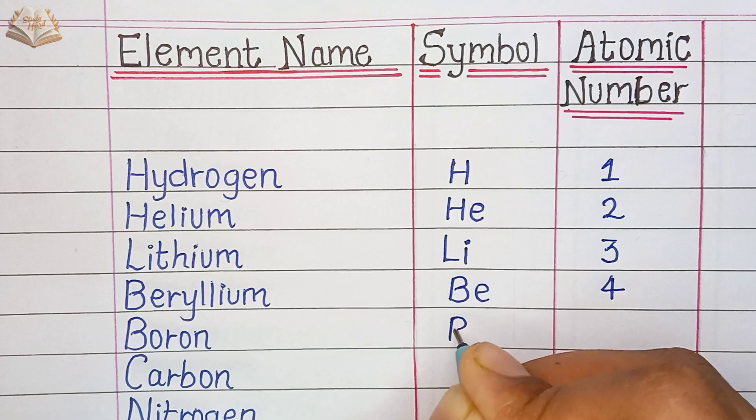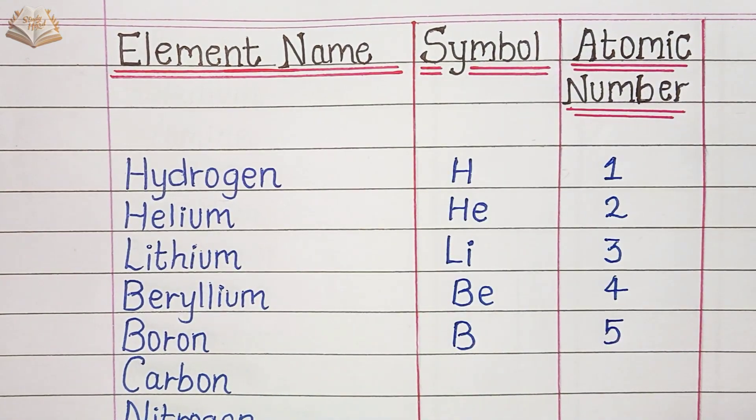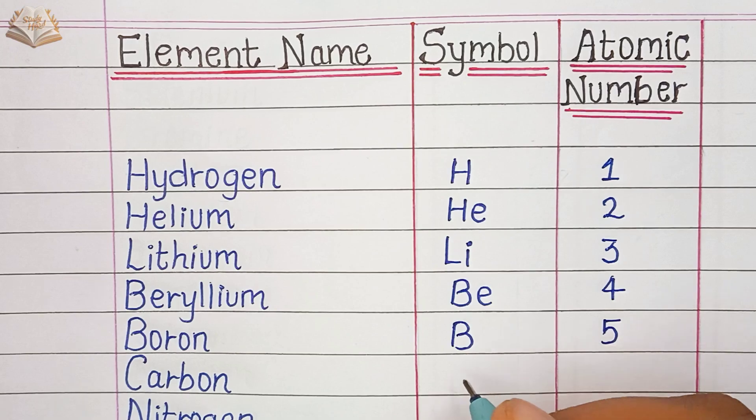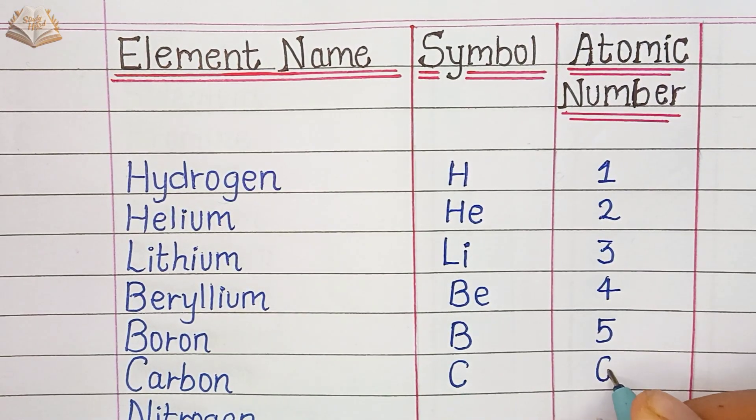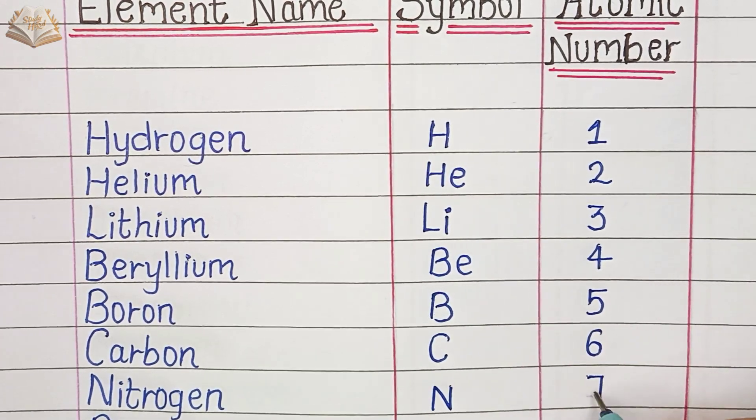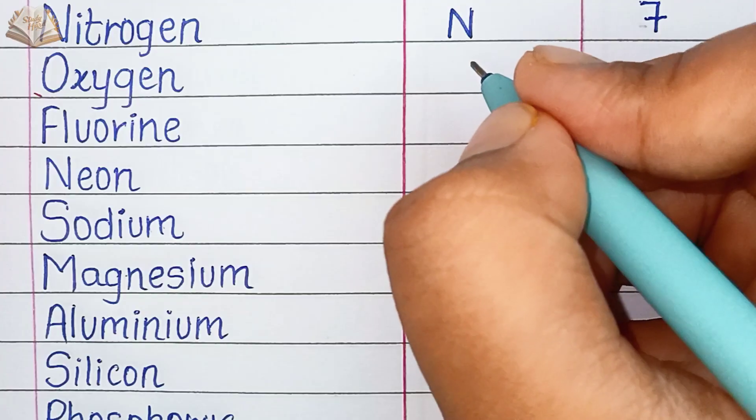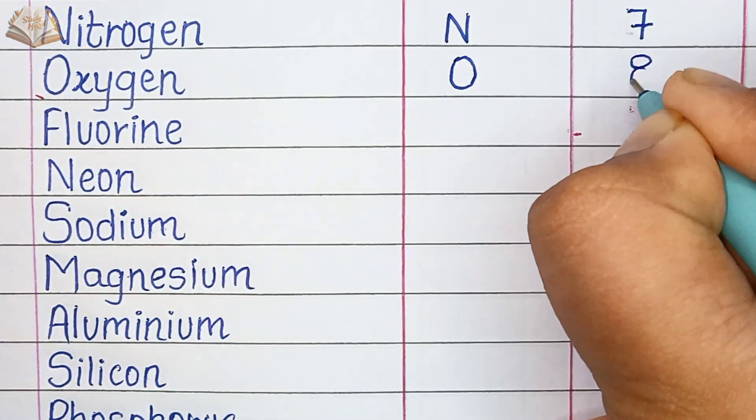Boron, symbol B, atomic number 5. Carbon, symbol C, and its atomic number is 6. Nitrogen, symbol N, atomic number 7. Oxygen, O, atomic number 8.